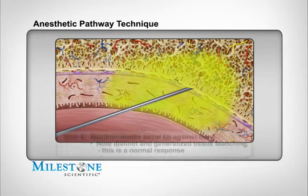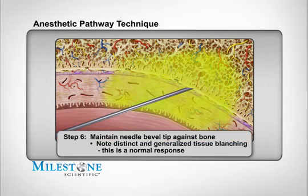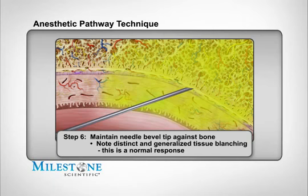Step 6: Maintain the needle bevel against the surface of bone once contacted. You should begin to notice distinct blanching of the palatal tissue as an effect of the vasoconstrictor in the local anesthetic. This is normal. When you've delivered the required dosage, you can remove the needle.